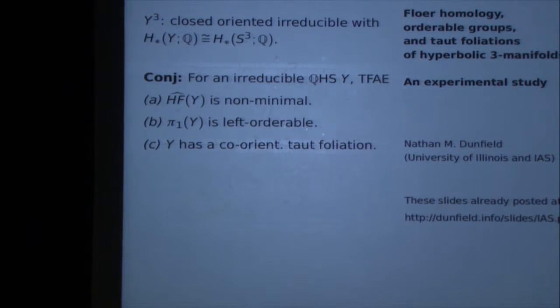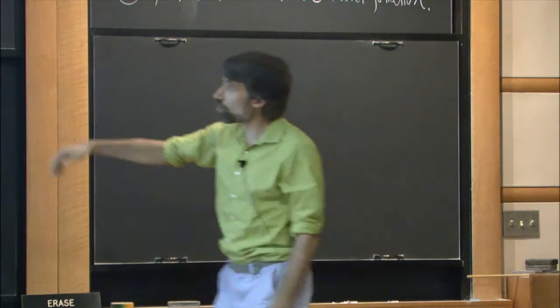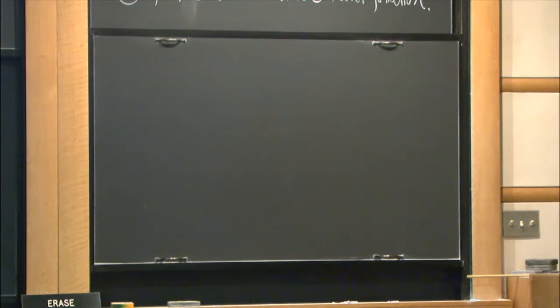So this is what I'll mean by a rational homology three-sphere — QHS — and I will typically forget to say irreducible, though I always mean it. Since this is what the talk revolves around, I have put it up there for you to remember, or not remember, since you can consult the text.